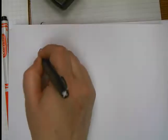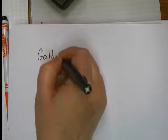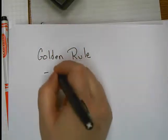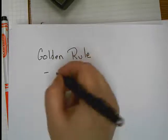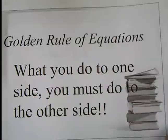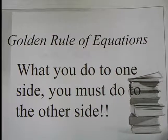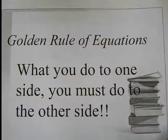Now, to start working with equations, you need to know the golden rule of equations. And the golden rule says, what you do to one side, you must do to the other. What you do to one side, you must do to the other. Go ahead, hit pause, and copy that down.